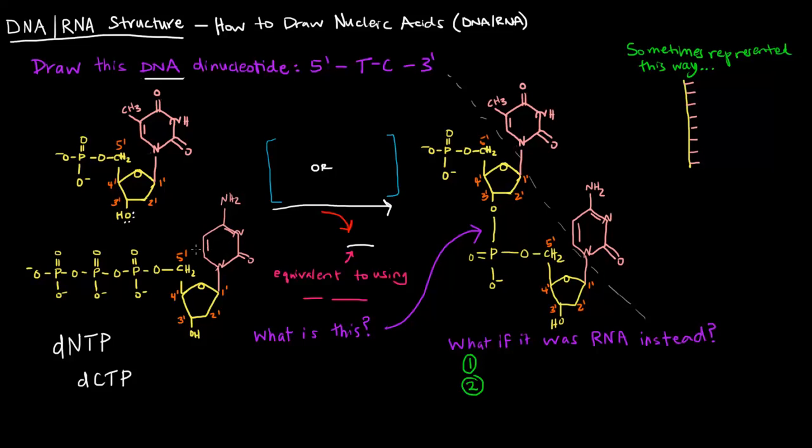So now what I want to do is connect these two. Specifically, this 3' OH of the DTMP is going to nucleophilically attack this phosphate, the 5' phosphate of the DCTP. And then when that happens, the electrons from here are going to go on to this O.